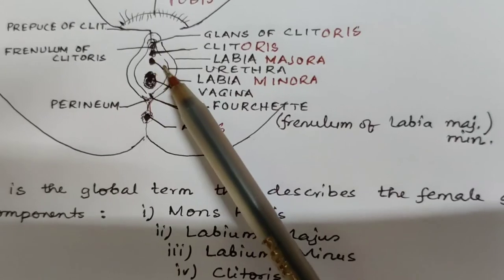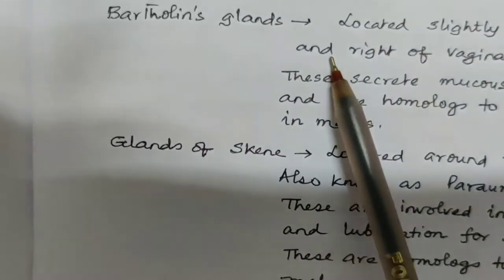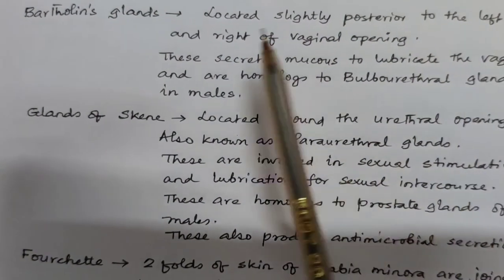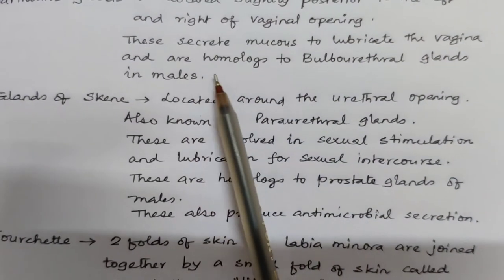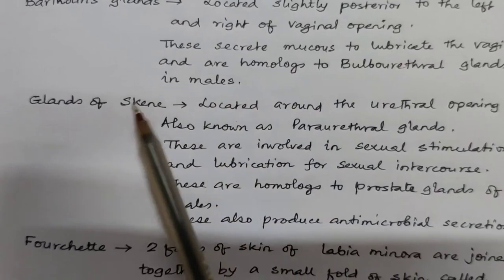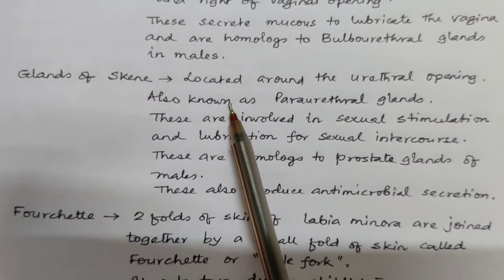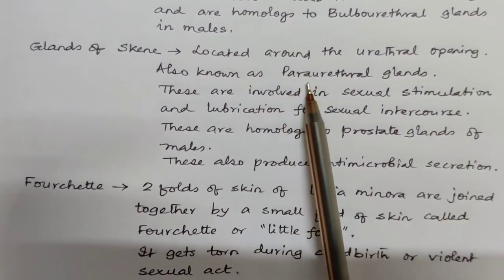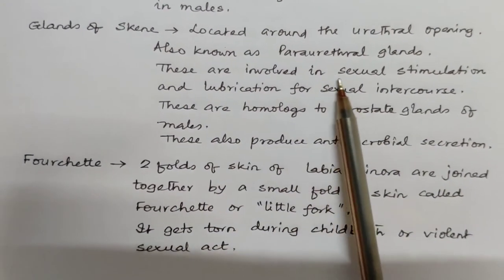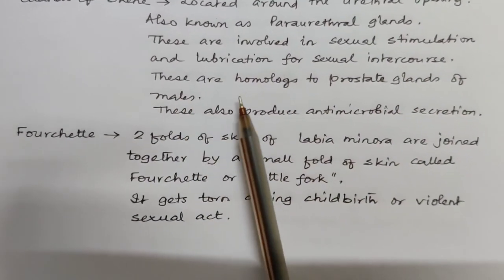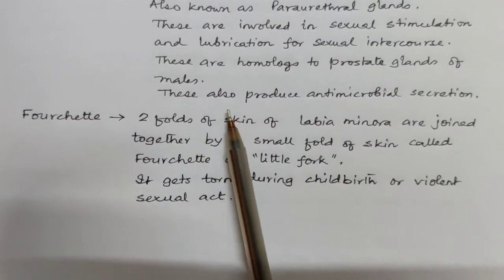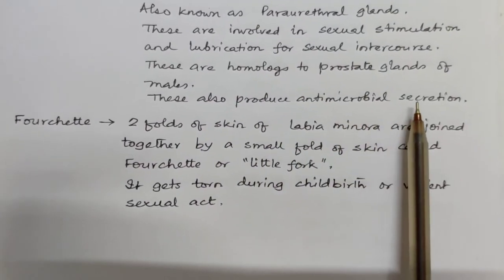Bartholin's glands are located slightly posterior to the left and right of the vaginal opening. They secrete mucus to lubricate the vagina and are homologous to the bulbourethral glands in males. Skene's glands are located around the urethral opening, also known as paraurethral glands. They are involved in sexual stimulation and lubrication, homologous to the prostate gland in males, and also produce antimicrobial secretions.